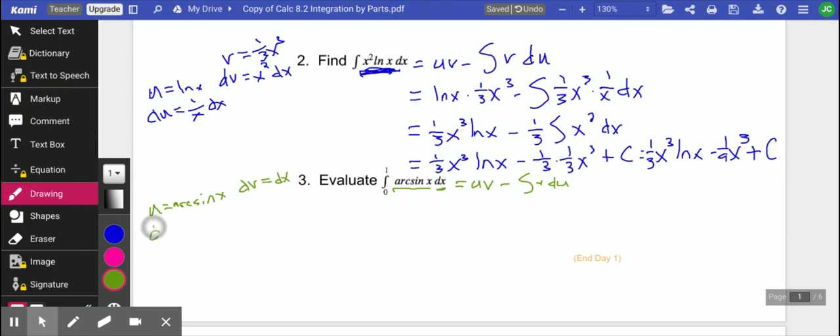So using our formula sheet, the derivative of arc sine is 1 over the square root of 1 minus x squared dx. And then v is just going to be x. That's the antiderivative of just 1 dx.